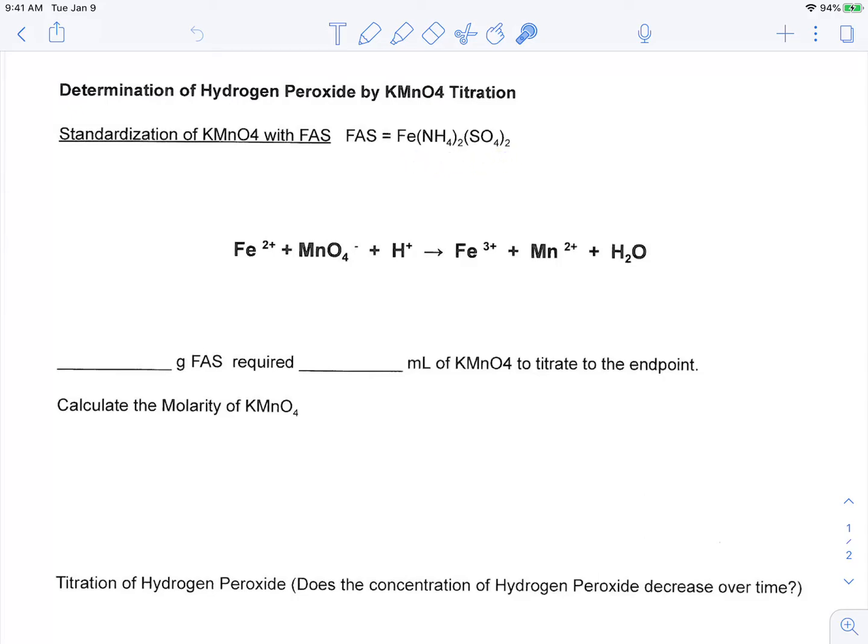The thing that we're actually interested in is just the iron here, the Fe2+ version of the iron ion. As we see in the reaction below, this is going to react with potassium permanganate. It's in an acidic environment, and then we have our products here.